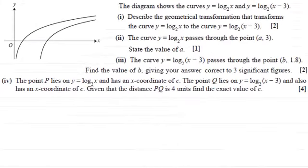Hi there. Now in this question we're given this diagram here which shows the curves of y equals log base 2 of x and y equals log base 2 of (x minus 3). And what we've got to do first of all is describe the geometrical transformation that transforms the curve y equals log base 2 of x to the curve y equals log base 2 of (x minus 3).